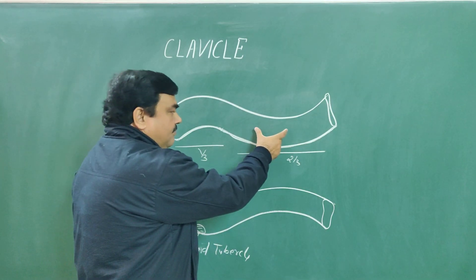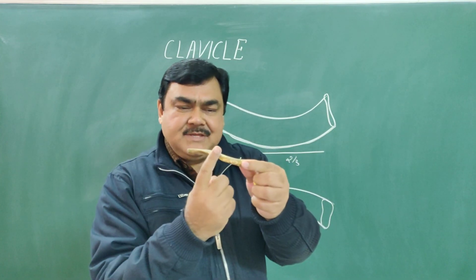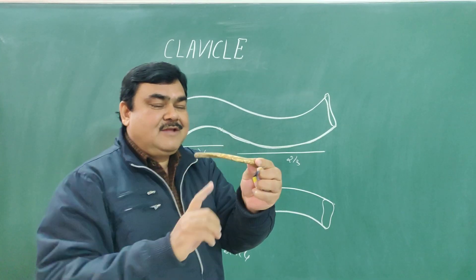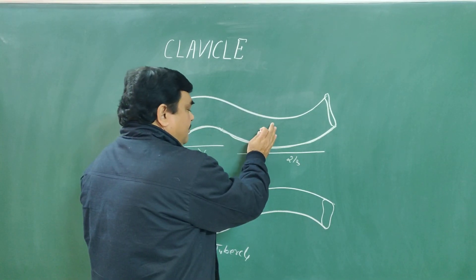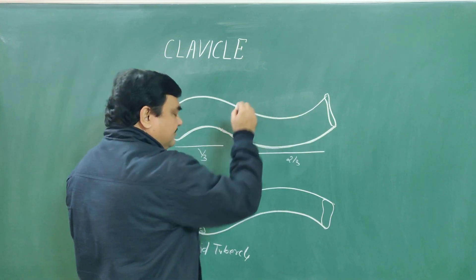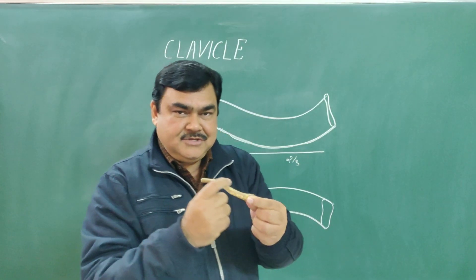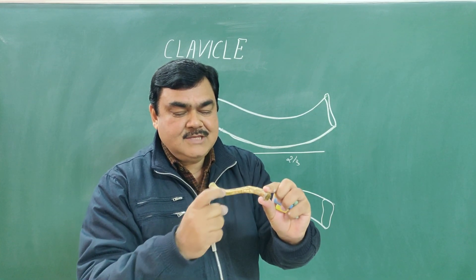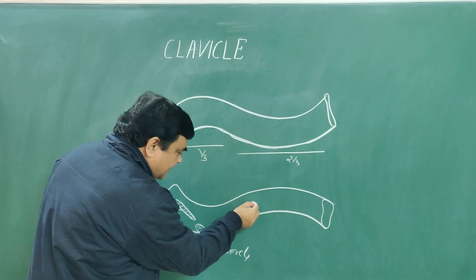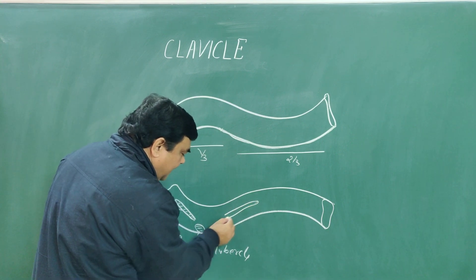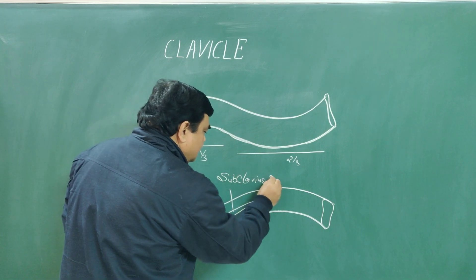If you see the medial two-thirds part, it has four surfaces: anterior surface, superior surface, posterior surface, and inferior surface. The superior surface is subcutaneous and smooth. On the inferior surface you can see a groove — this groove is known as the subclavius groove.